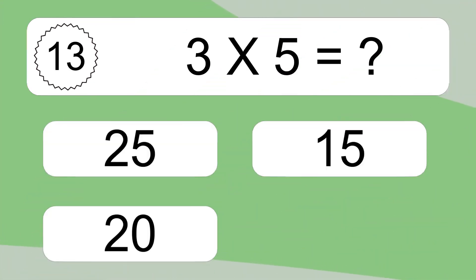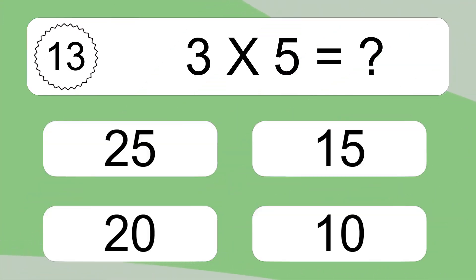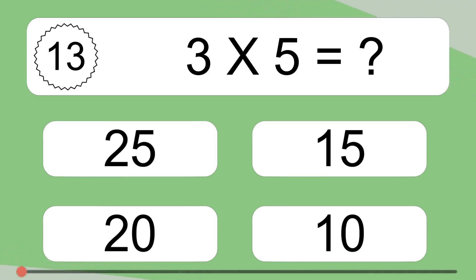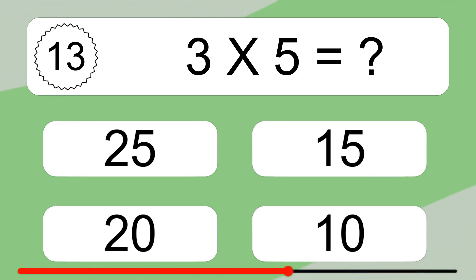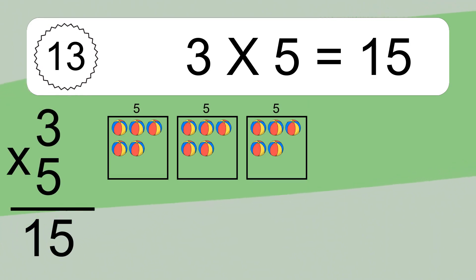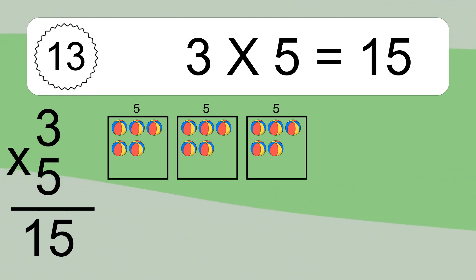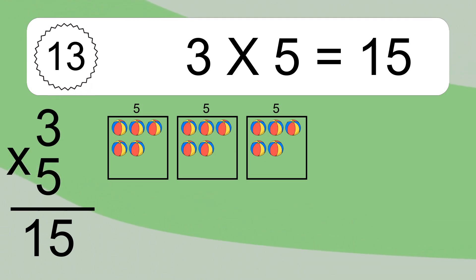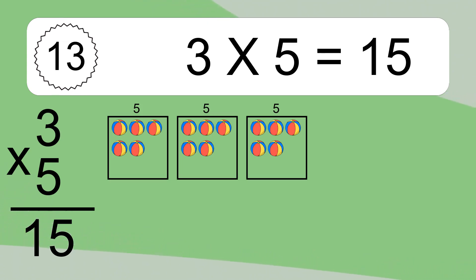3 times 5 equals what? 3 times 5 equals 15. We have 3 boxes, and each box has 5 colorful balls inside. If you count all the balls in all the boxes together, you will have 3 times 5 balls. This equals 15 balls.